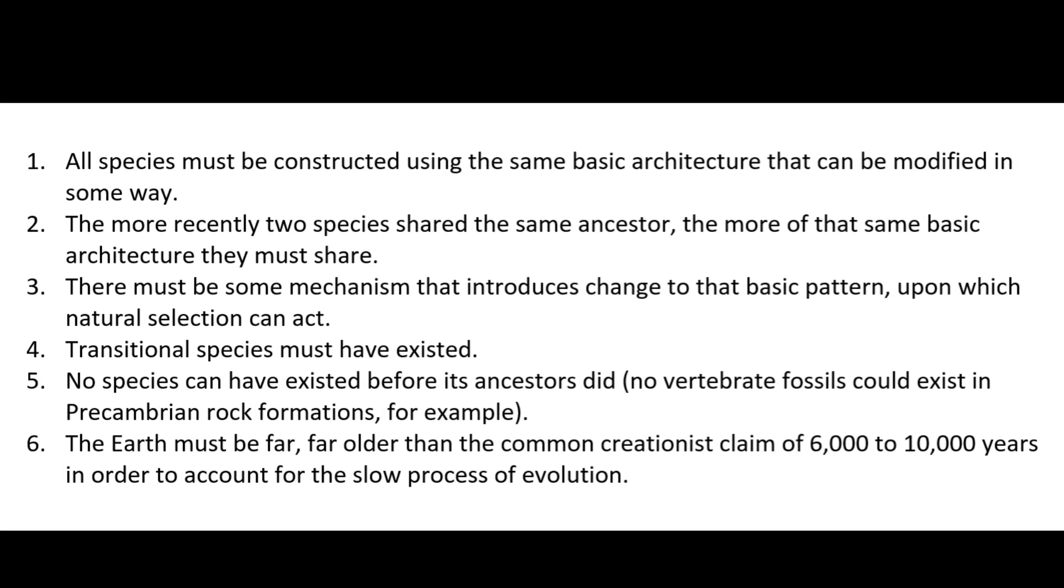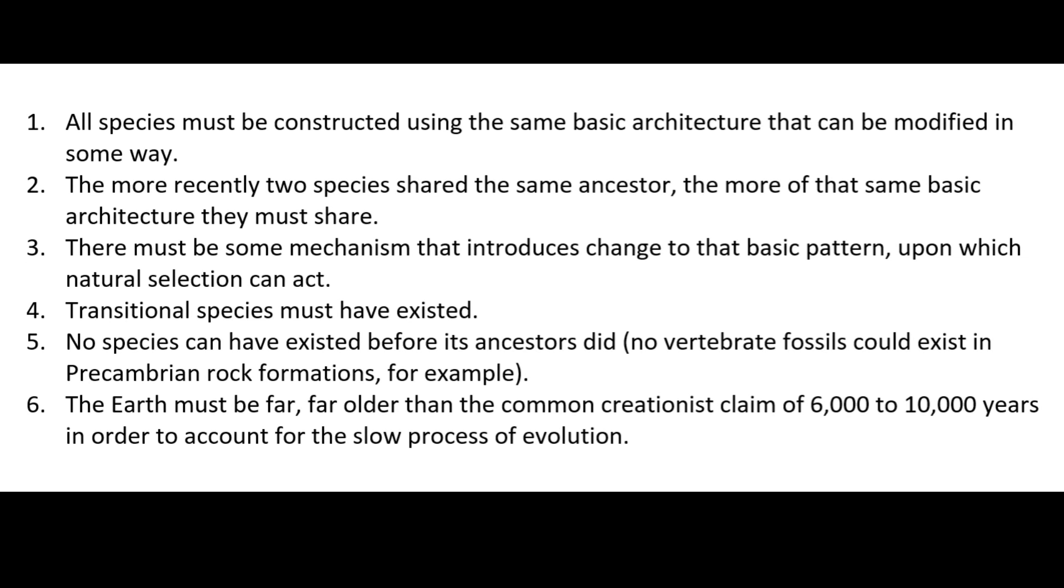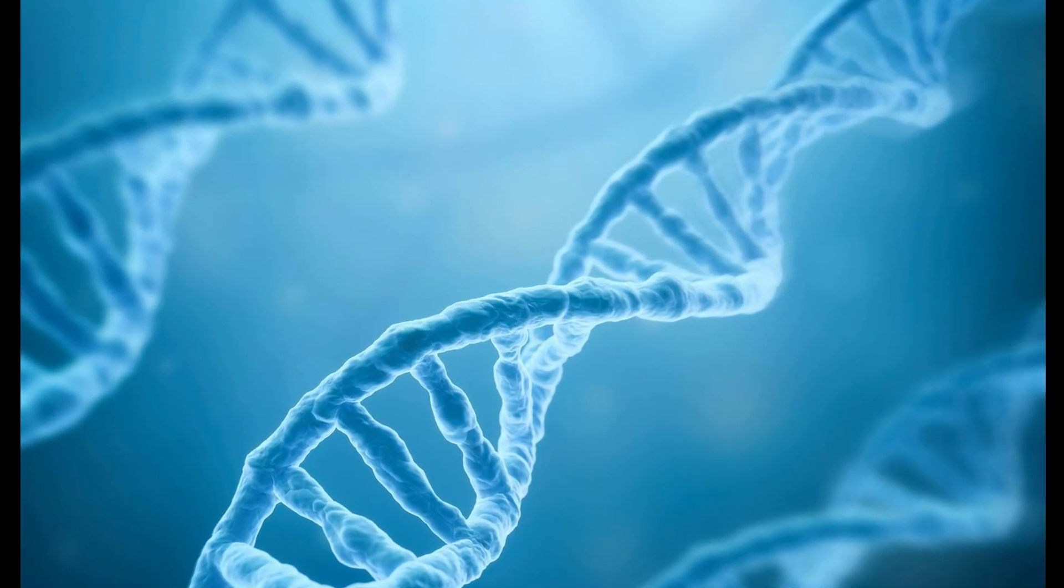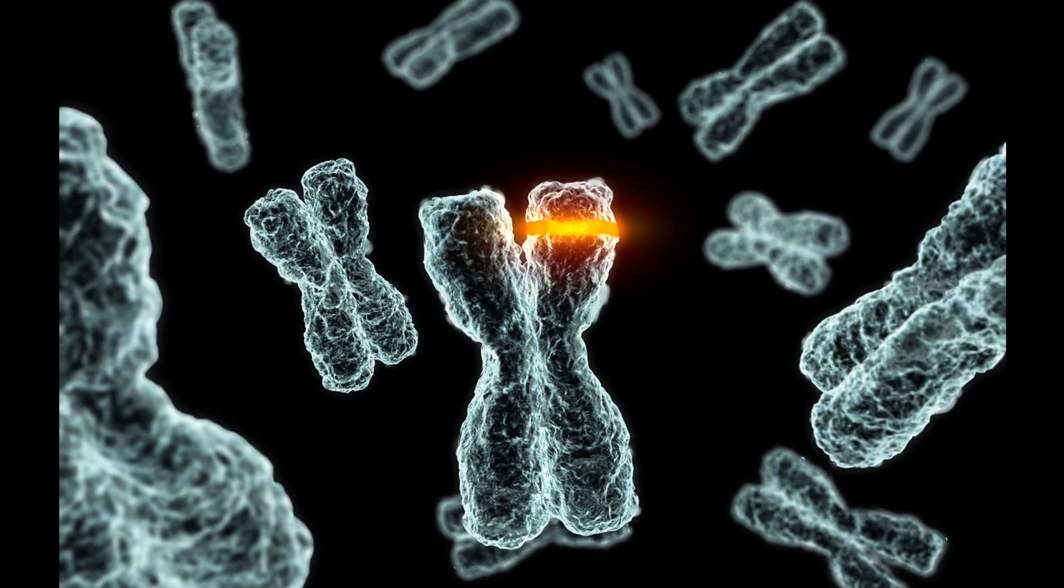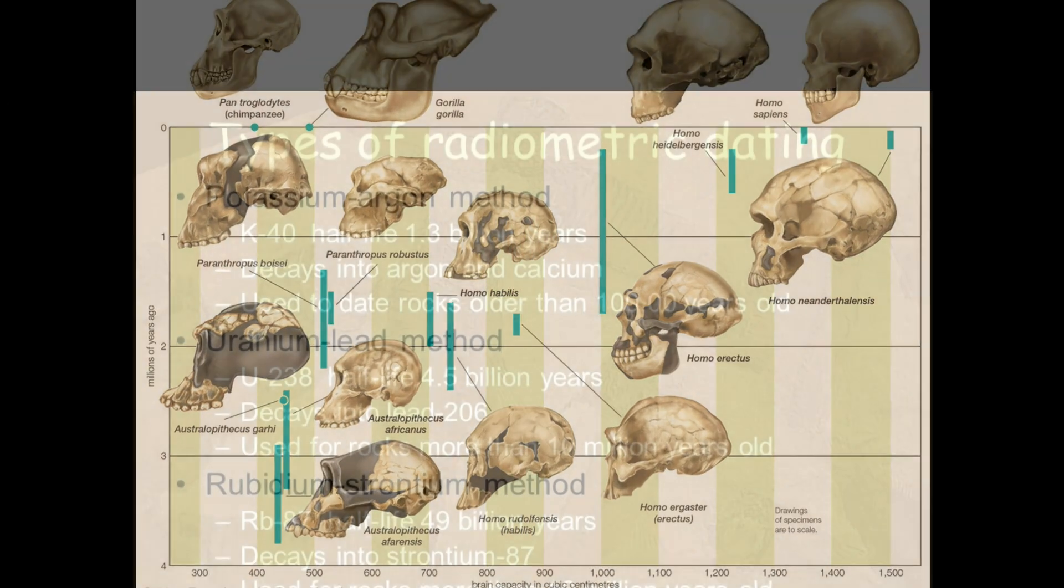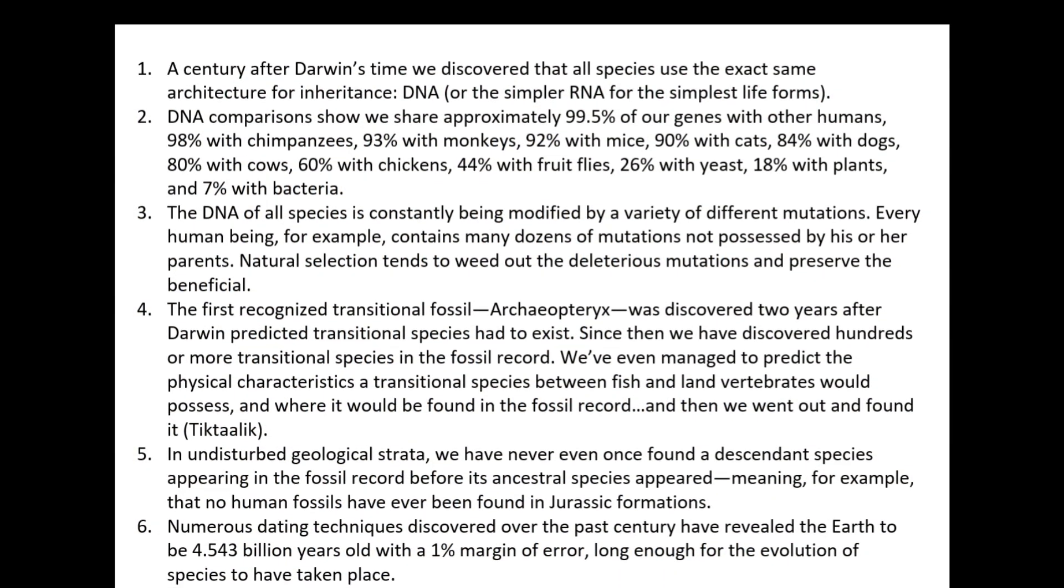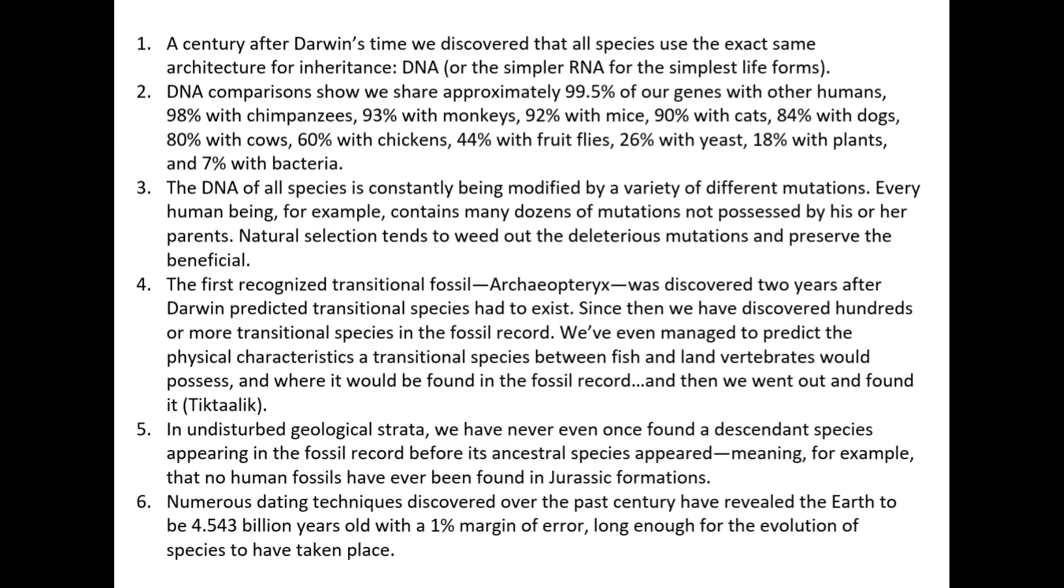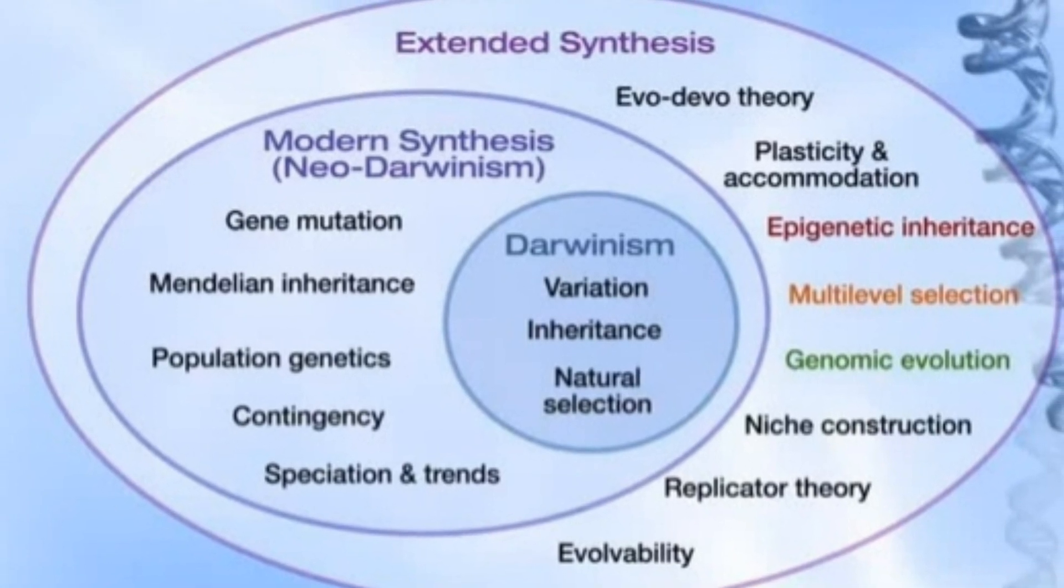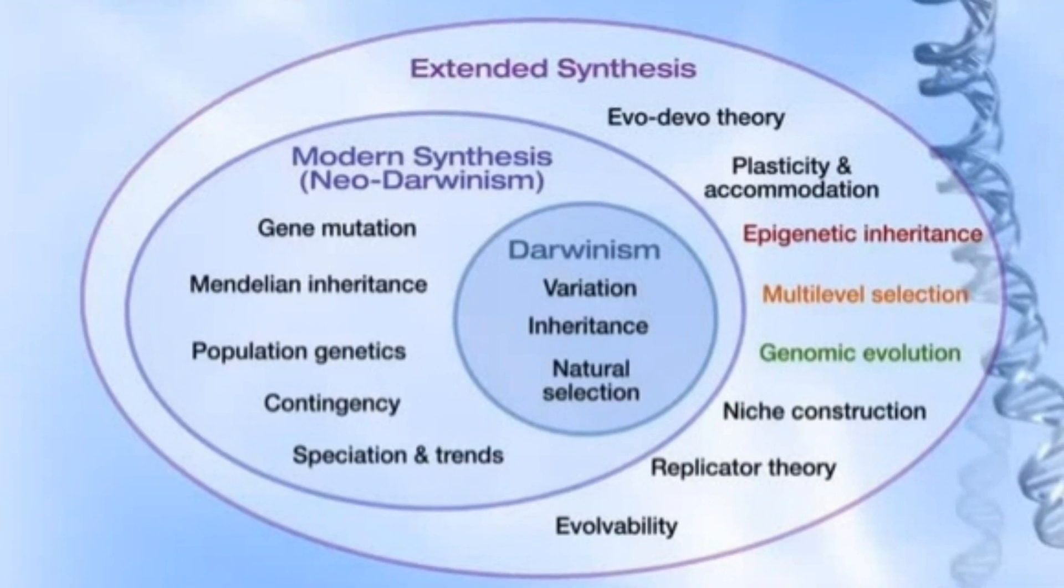Evolutionary theory makes numerous falsifiable claims that were predicted well before the evidence was discovered, such as all life sharing the same basic architecture—DNA—the existence of a mechanism that modifies that architecture—mutation—transitional fossils, a multi-billion-year-old Earth, and more. Not only has the evidence not falsified any of these predictions, but it has only strongly supported the theory. That's exactly why the theory of evolution is a theory, and the most successful theory in biology, in fact.